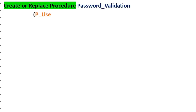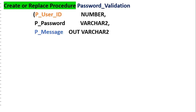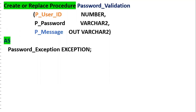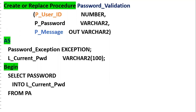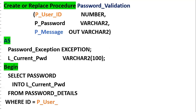I will start creating the procedure: CREATE OR REPLACE PROCEDURE password_validation. It has two input parameters — the user_id and the password — and one OUT parameter, p_message, to capture whether the password was updated or not. There is a local exception declared called password_exception, and a local variable l_current_password used to capture the current password from the password_details table based on the user ID.